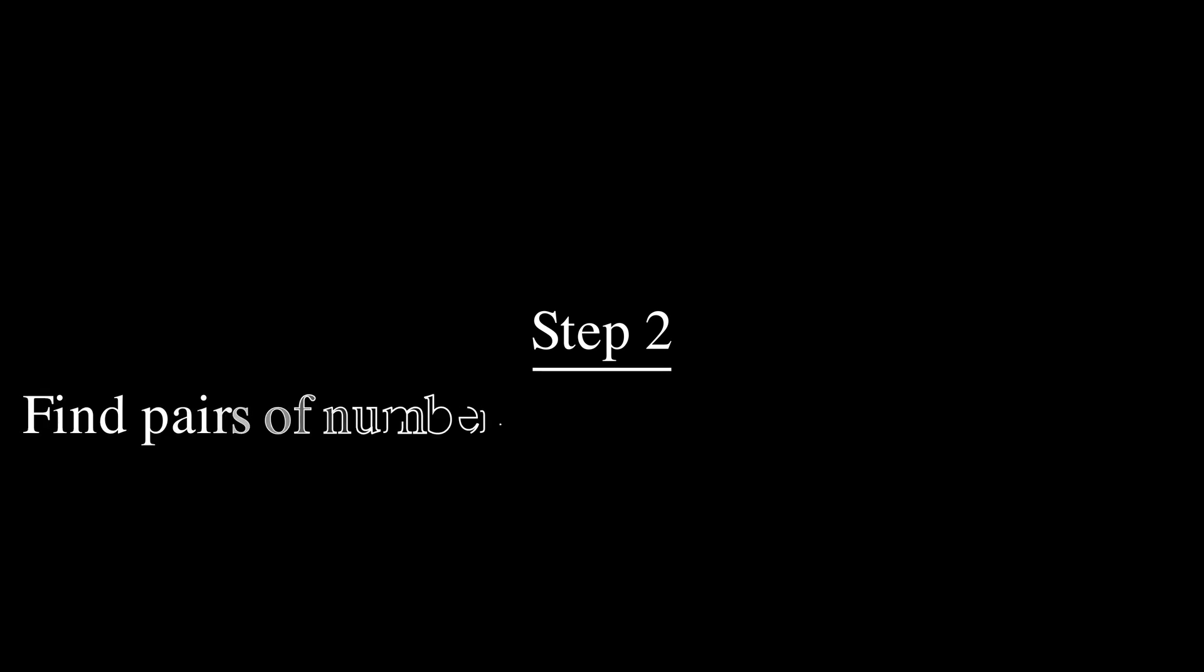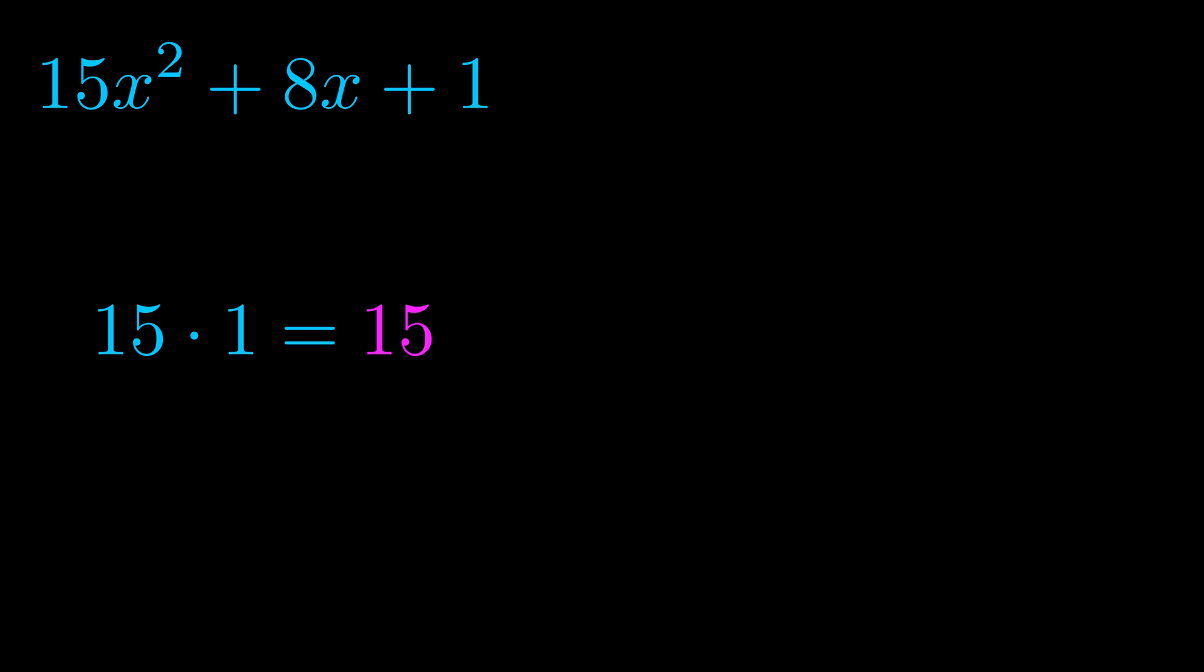Step two is to try to find all of the pairs which multiply to this number. Now it turns out you don't really need to find all of them but go ahead and write down as many numbers as you can that multiply to the magenta value for now. Pause the video and resume when you're ready to continue. Okay, here's what I came up with.